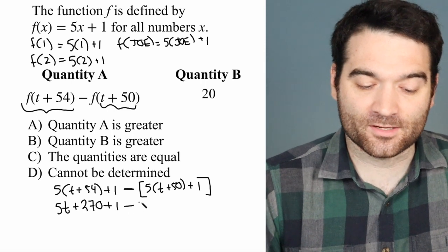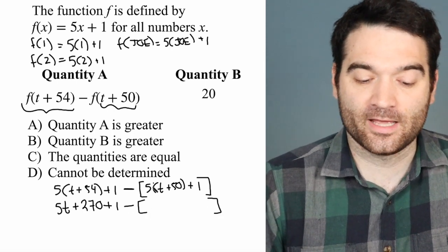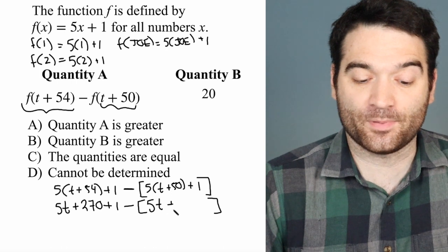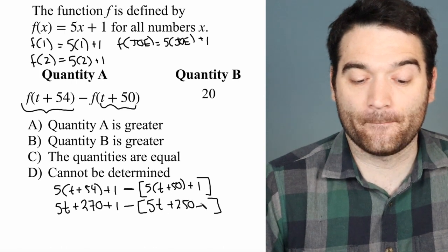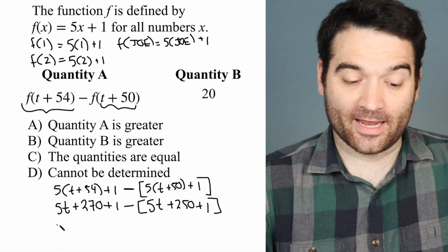minus, I'll keep this in brackets for now, distribute that in. That's 5t plus 250 plus 1, and then I get,